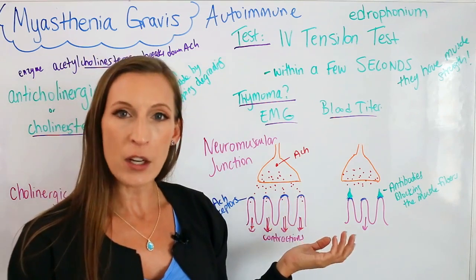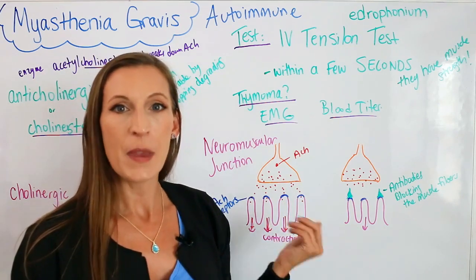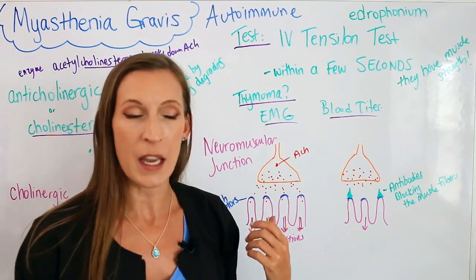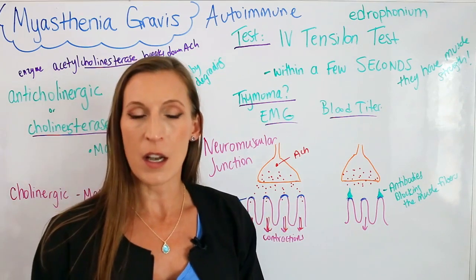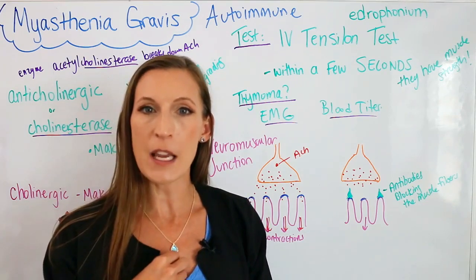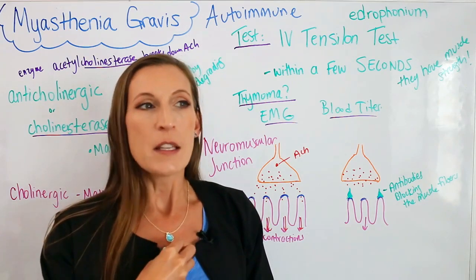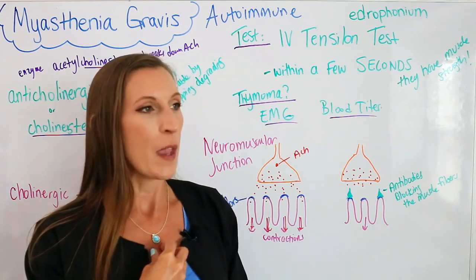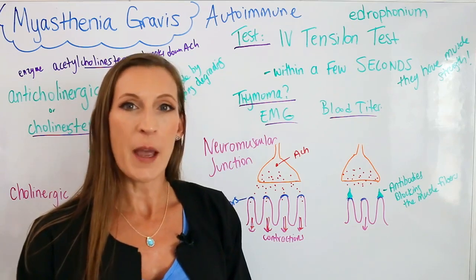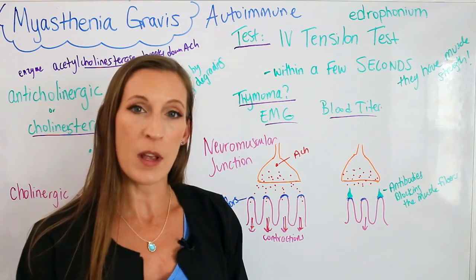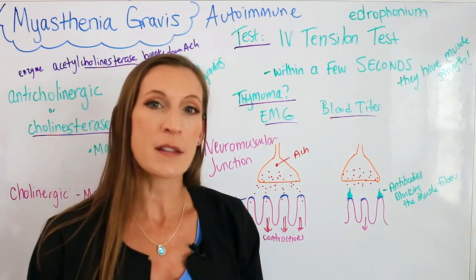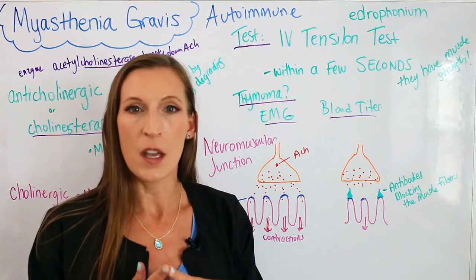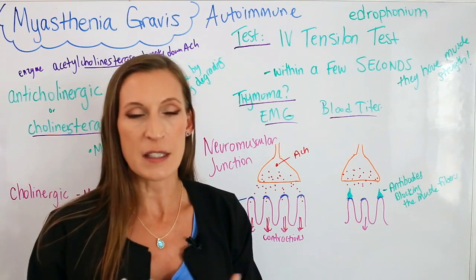Other diagnostic tests include an EMG to test nerve conduction in the muscles, and a blood titer to see if there are antibodies in the blood. They'll also do a chest X-ray looking at the thymus gland. When you're a baby, your thymus gland is slightly enlarged and sits right behind your sternum. As you get older it gets smaller, but in patients with myasthenia gravis it's connected with a thymoma — an enlarged thymus gland. Connect that dot with myasthenia gravis in diagnostic assessment findings.